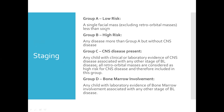Staging: Group A is low risk — a single facial mass excluding retroorbital masses, less than 10 centimeters. Group B is high risk — any disease more extensive than Group A but without CNS disease. Group C is where CNS disease is present, including any child with clinical or lab evidence of CNS disease; all retroorbital masses are considered high risk and included here. Group T involves bone marrow involvement — any child with lab evidence of bone marrow involvement associated with any other stage.